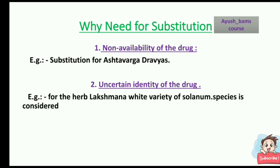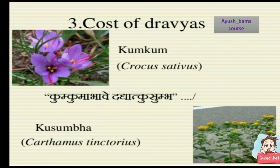For example, substitution for Ashtavarga dravyas. Second is uncertain identity of the drug — for example, for the herb Lakshama, a white variety of Solanum species is considered. Third is cost of dravyas: sometimes the cost of a dravya is so high that we can't afford it, so we can go for a substitute.